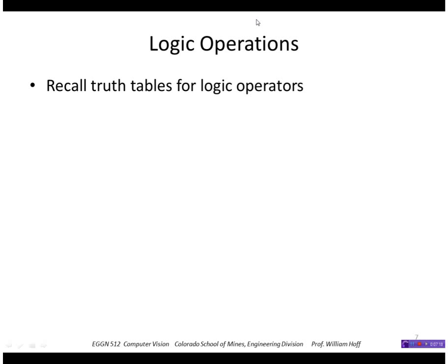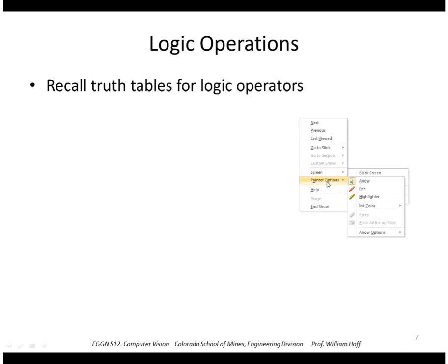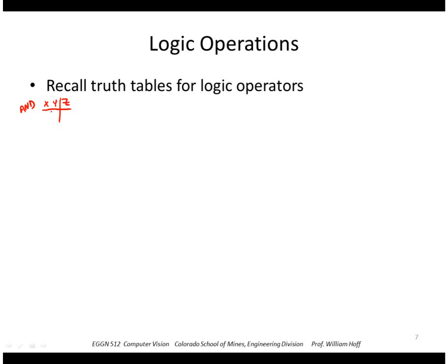Okay, let's look at logic operations. First remember what a truth table is for a logic operation. So in the case of an AND of x and y to produce an output z, that is defined by this truth table. So z is true where x and y are both true.